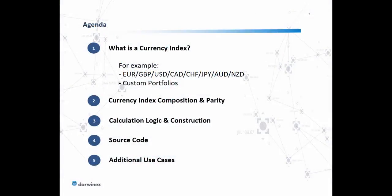In terms of agenda, we'll start out by discussing what a currency index is. We'll discuss some examples using the eight major currencies: the euro, British pound, US dollar, Canadian dollar, Swiss franc, Japanese yen, Aussie dollar, and New Zealand dollar. We will also discuss applications of the same currency index thought process to custom portfolios, and describe some example objectives behind constructing custom portfolios, making indexes out of them, why you would need them, and what benefits they pose.